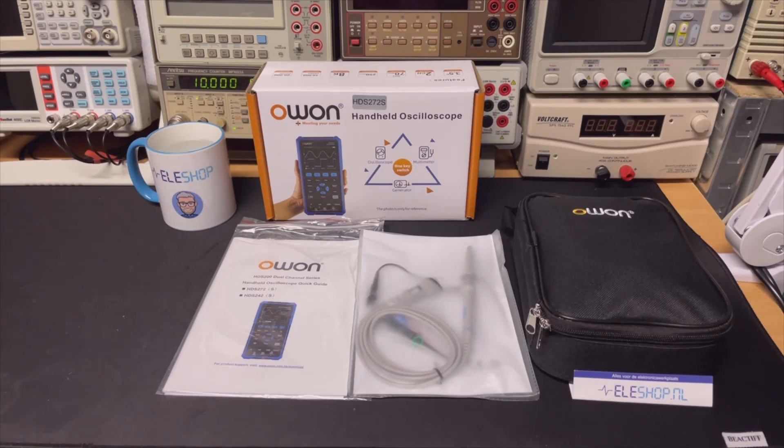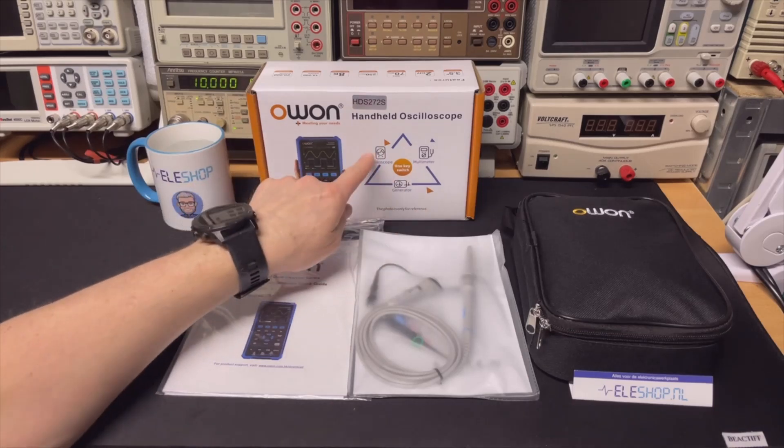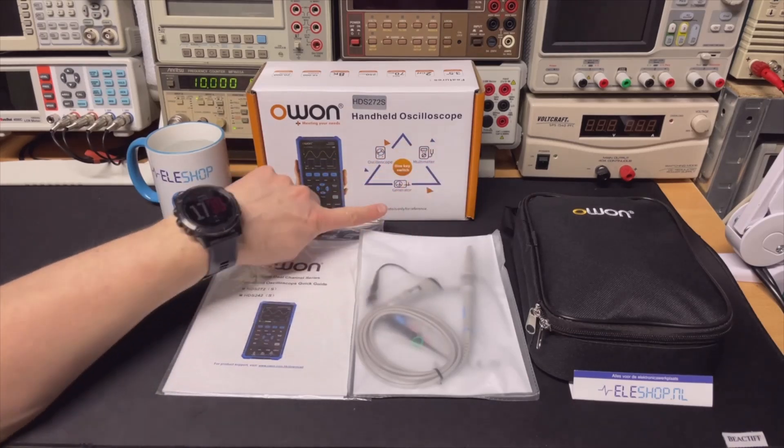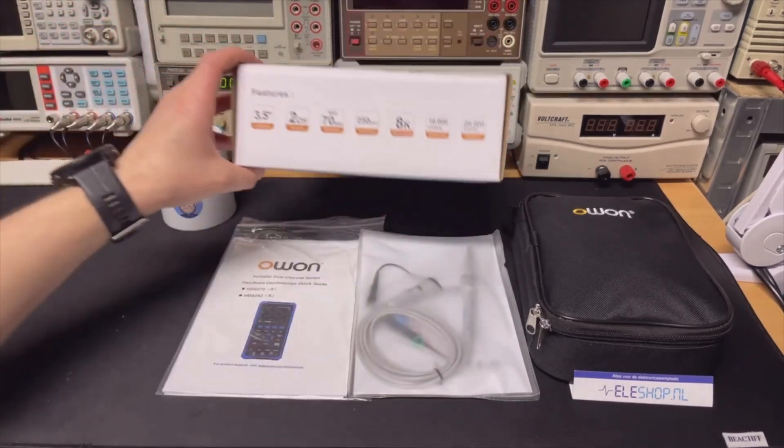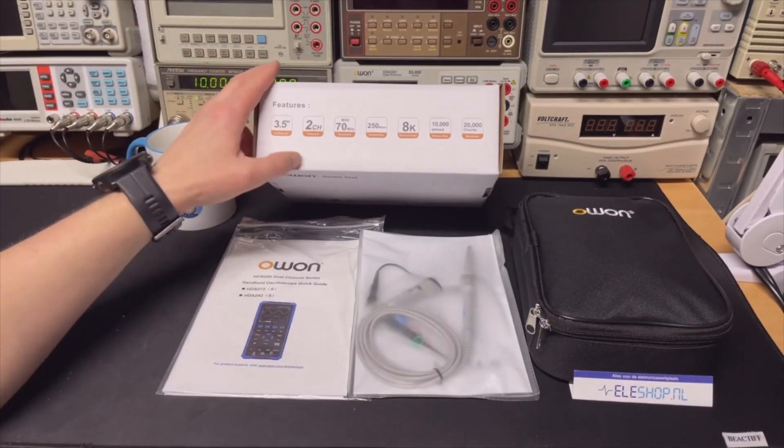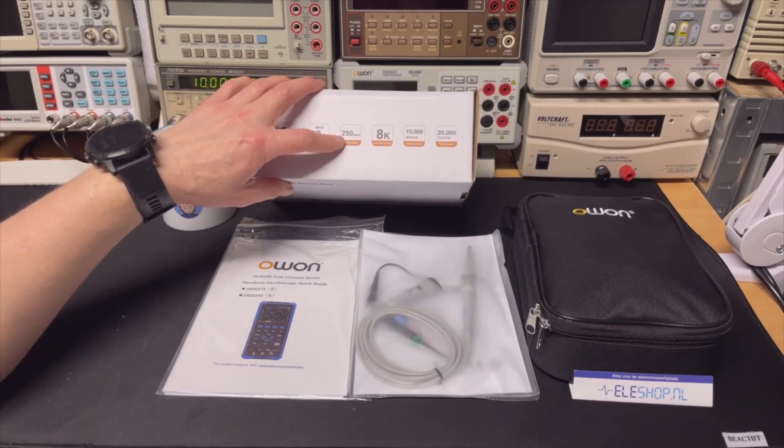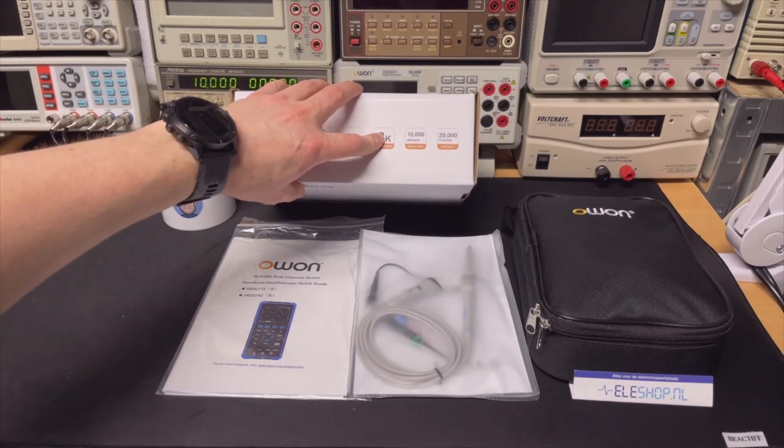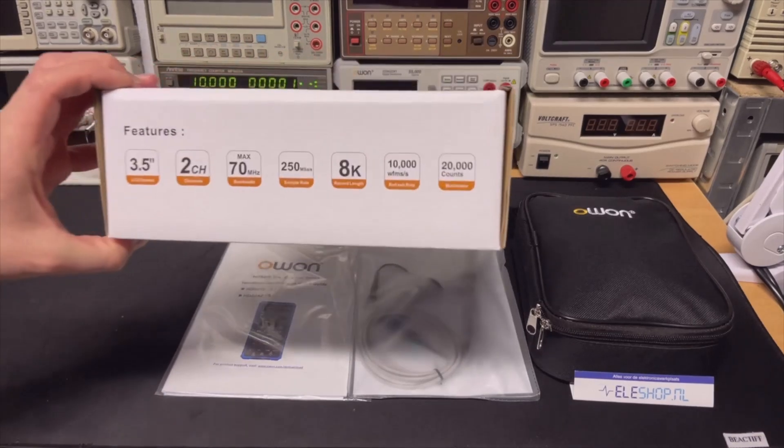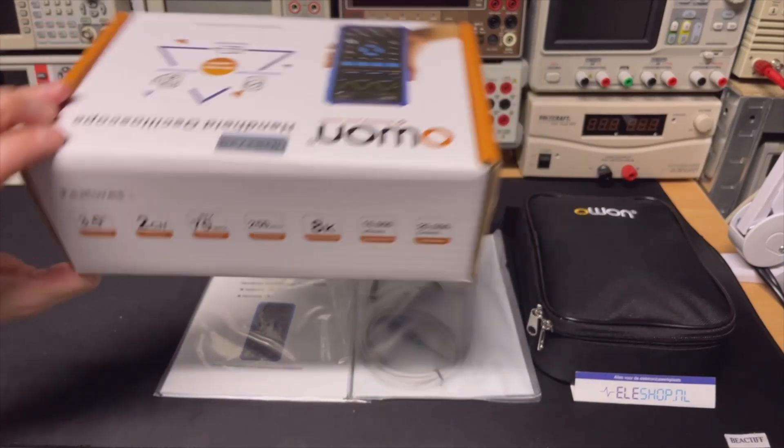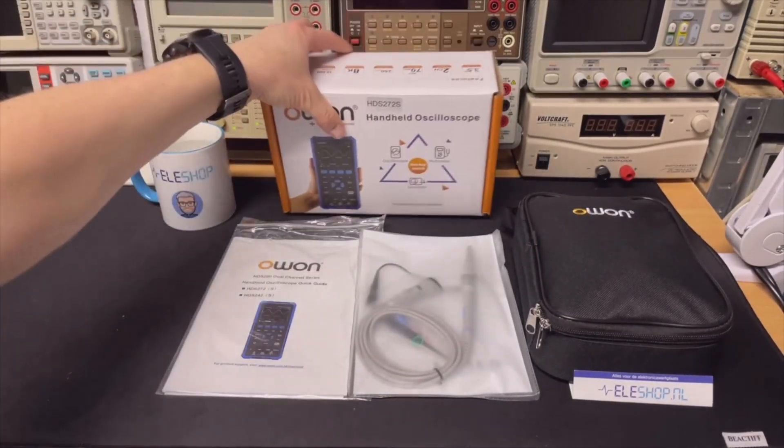As you can see here the quick overview: it's an oscilloscope, multimeter, and generator. Then we have some quick specs - 3.5 inch, two-channel oscilloscope, 270 megasamples per second, sample rate, recording length, refresh rate, and here how many counts for the multimeter. These are pretty nice specs I would say.